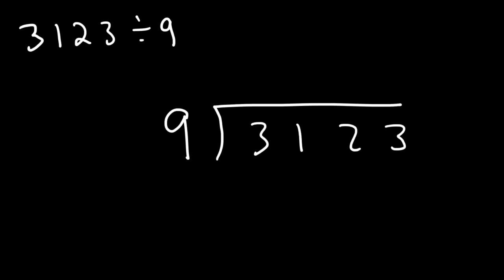So try this one. 3123 divided by 9. So go ahead and use short division to get the answer. So how many times does 9 go into 31? 9 goes into 31 three times.